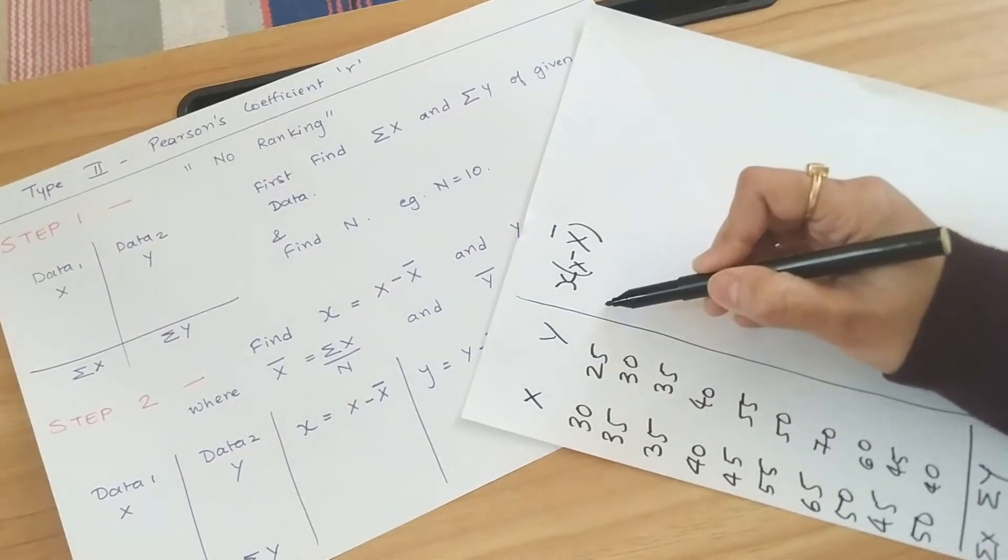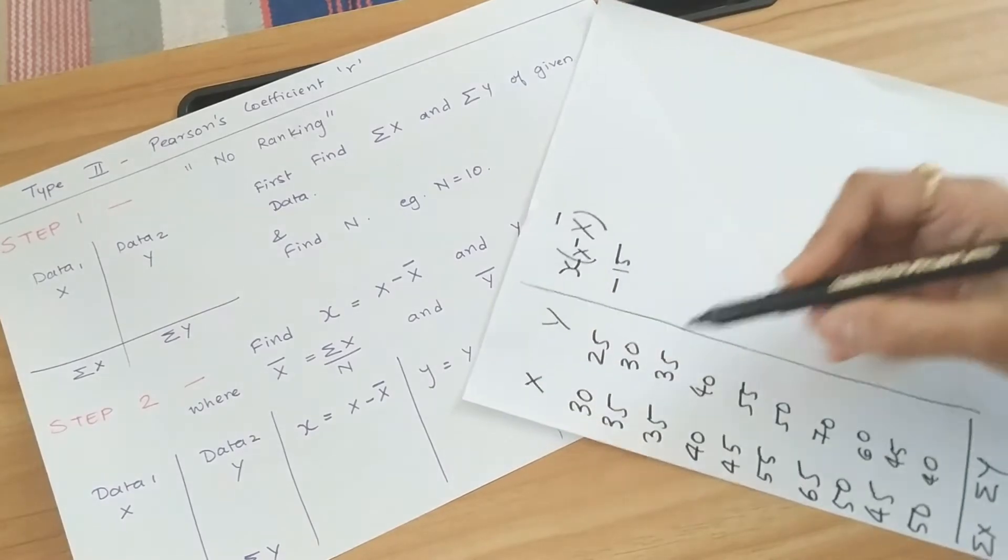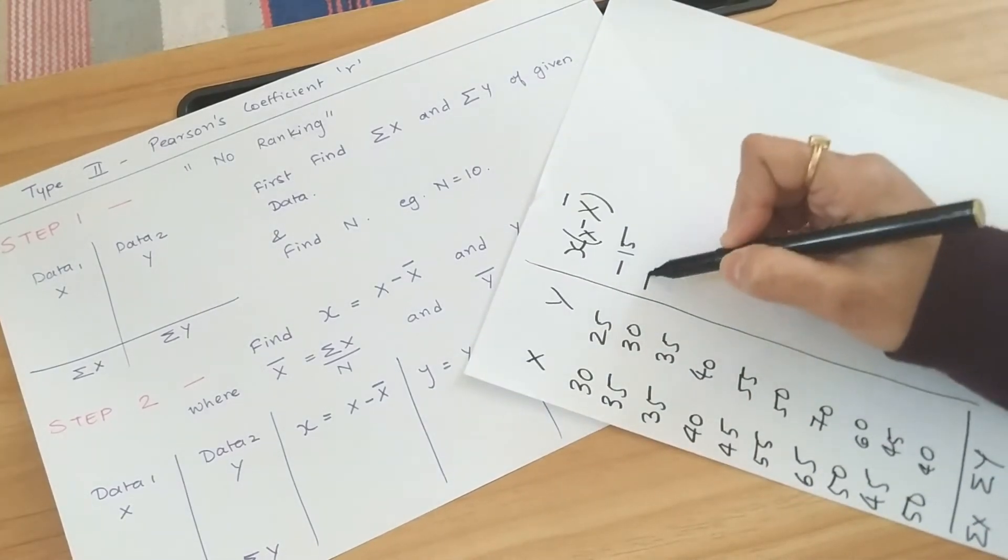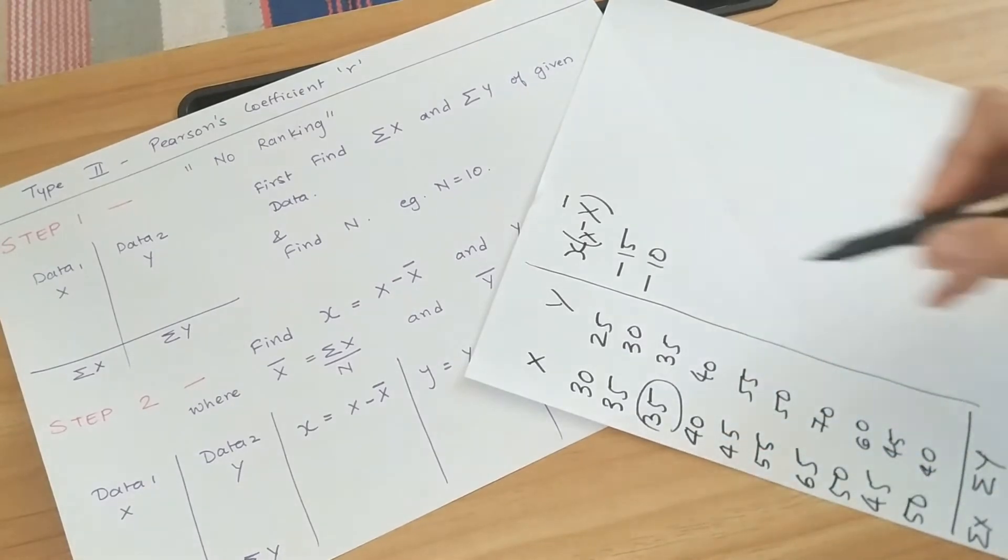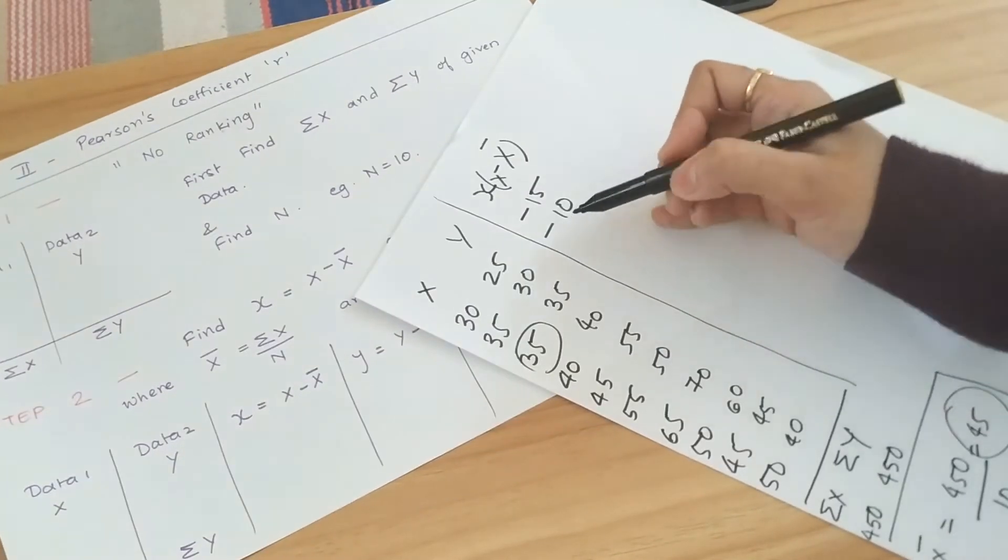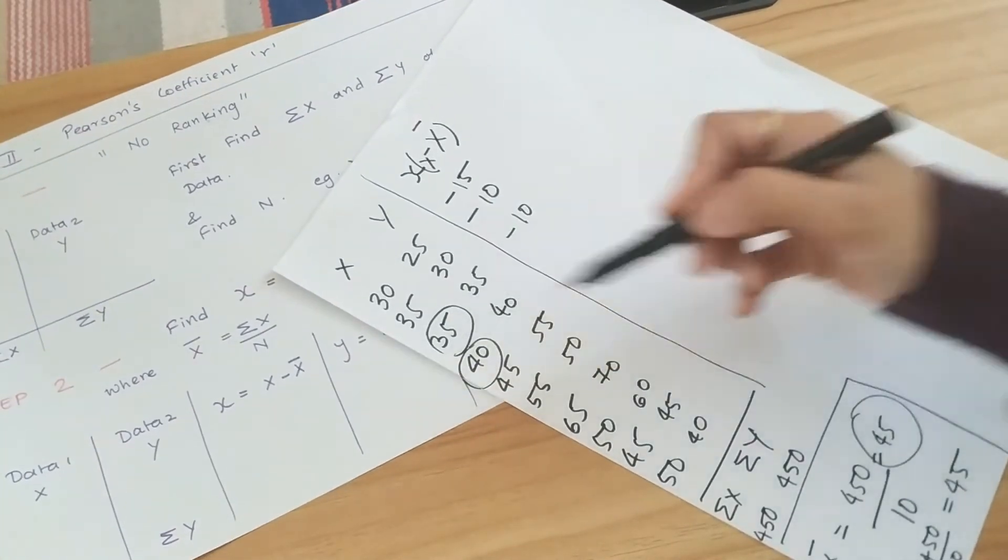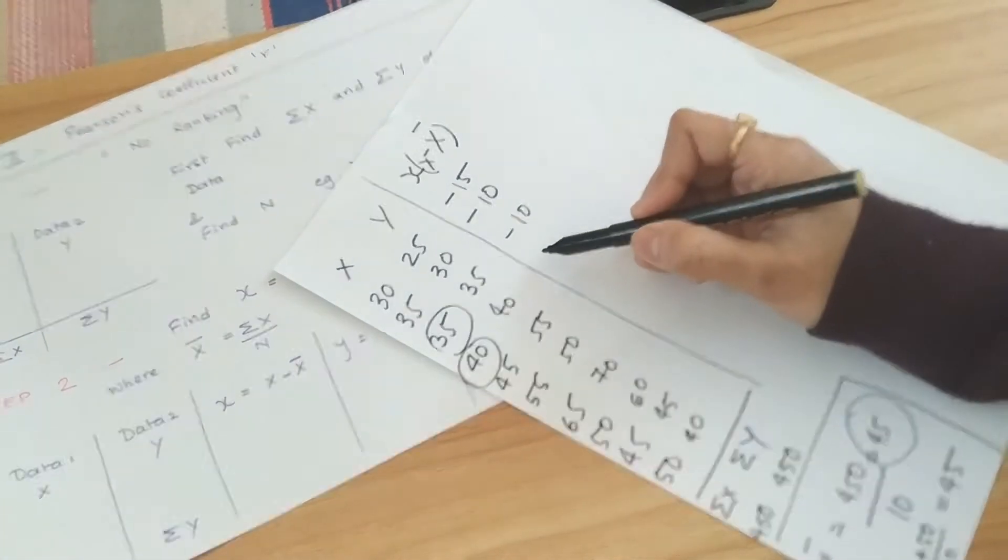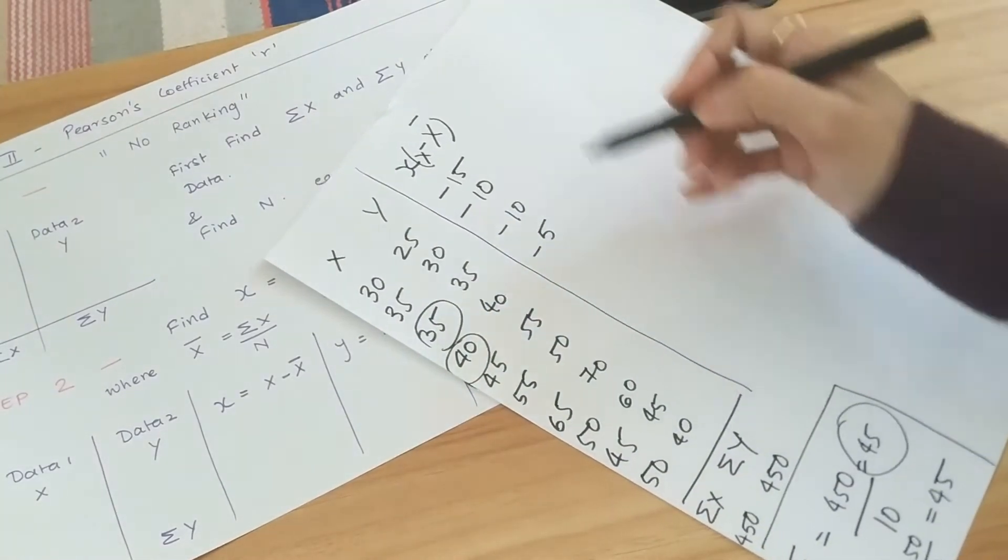So 30 minus 45 gives you minus 15. 35 minus 45 gives you minus 10. 35 minus 45 gives you again minus 10. 40 minus 45 gives you minus 5. Go on subtracting.